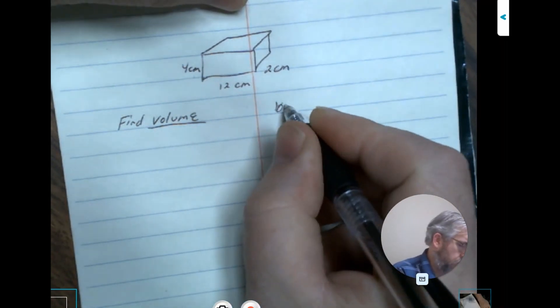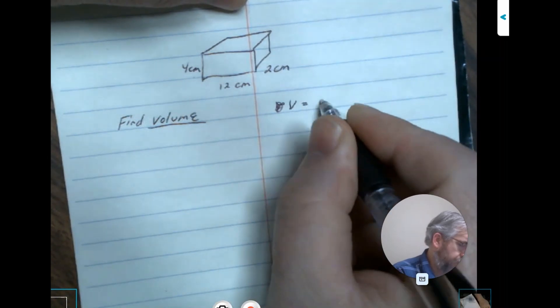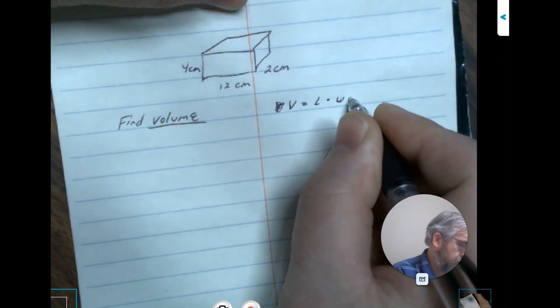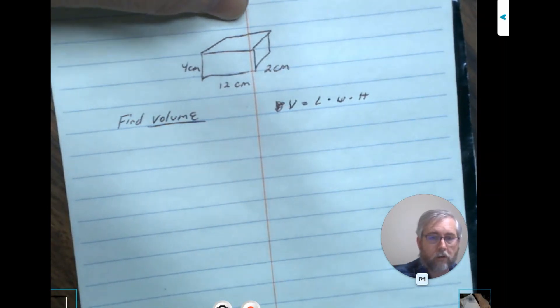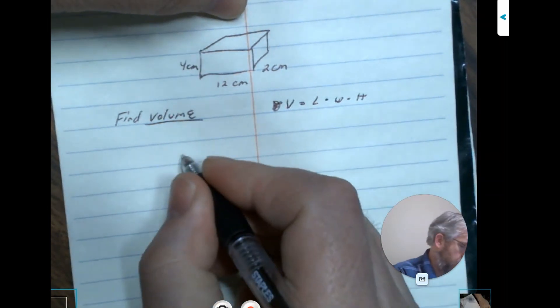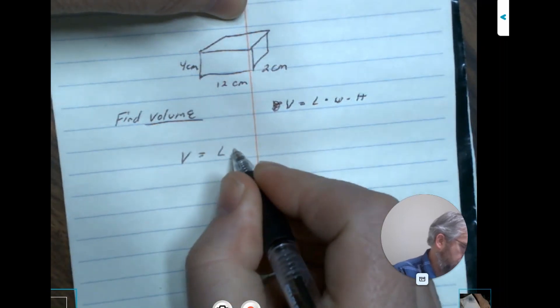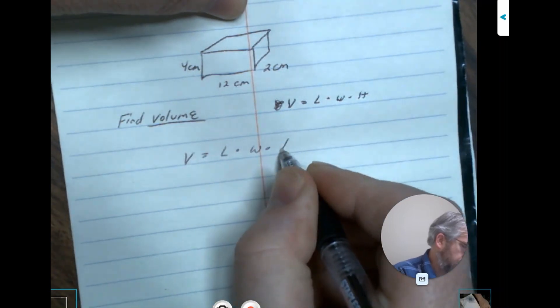So if we remember, the volume basically is the length times the width times the height. That's what we're going to be using for it. So if I was to go ahead and create my formula: the length times the width times the height.